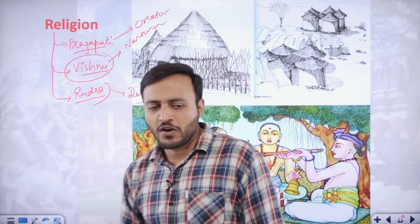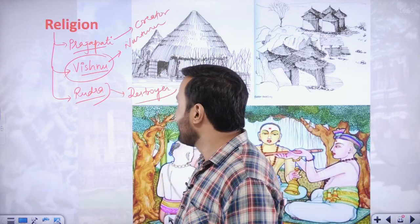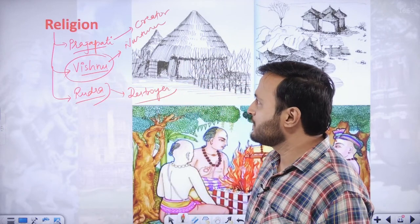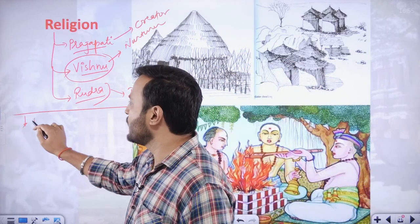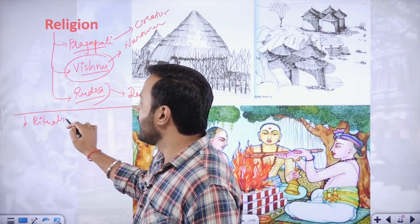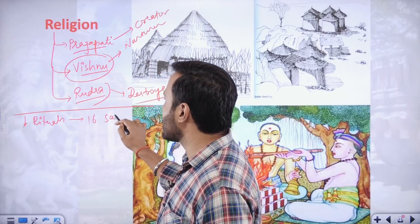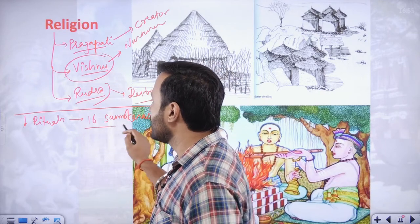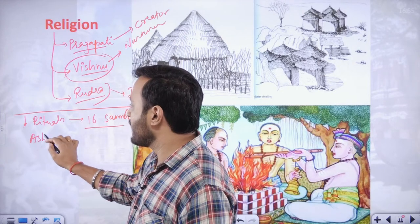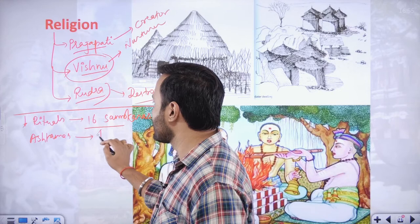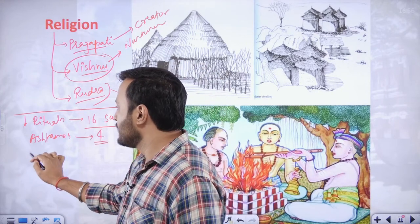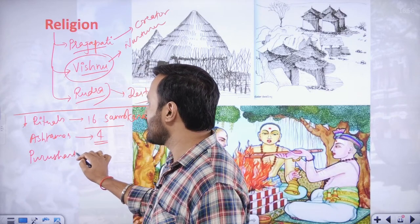These changes occurred because the nature of economy, society, and people had changed, so the nature of religion also had to be different. Lots of rituals and customs were introduced — the 16 samskaras, the four different ashramas, and the four different purusharathas. The ashramas are Brahmacharya, Grihastha, Vanaprastha, and Sanyas. The purusharathas are Dharma, Artha, Kama, and Moksha.